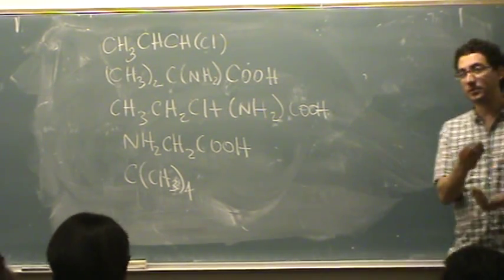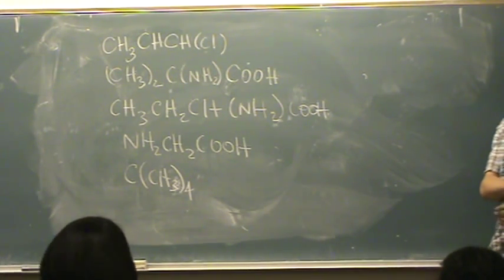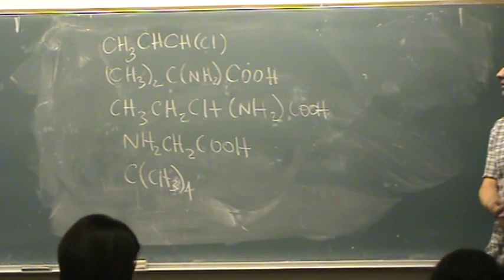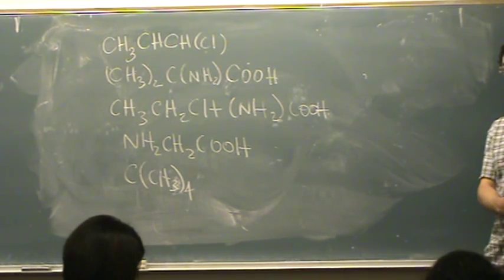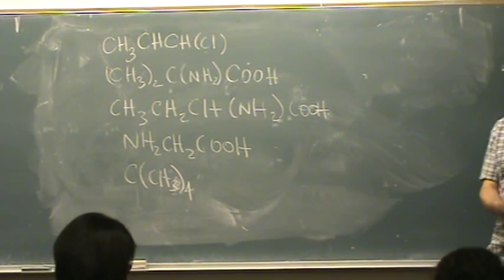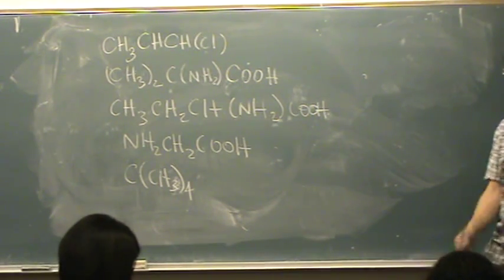If it's optically active, so it's a non-superimposable mirror image, another really easy way to say it, if there's a carbon with four different groups on it, then it has to be. So you're looking for a carbon with four different items on it.